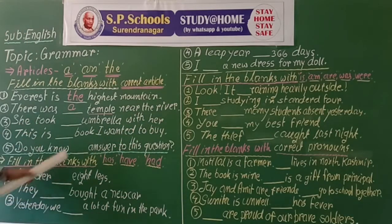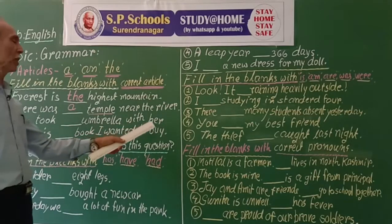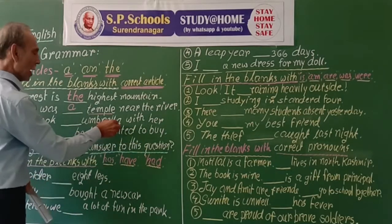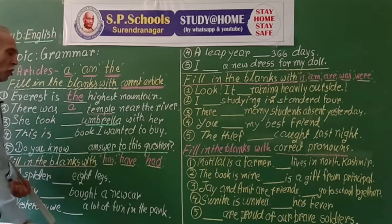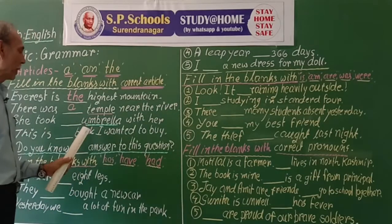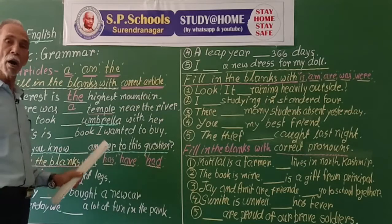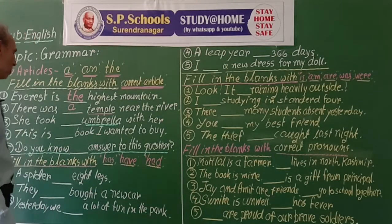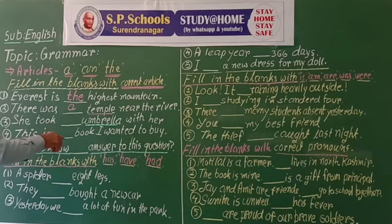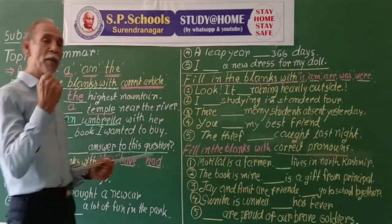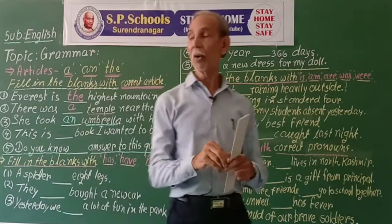She took blank umbrella with her. Umbrella is a common noun — an object. It begins with vowel sound 'u', so it will take article 'an'. She took an umbrella with her.